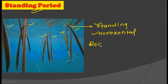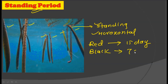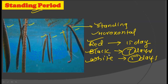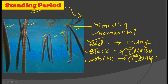In red mangroves, this standing period is 15 days. In black mangroves, this period of standing is 7 days. And for white mangroves, this period is 5 days. So the propagules which fall off from the parent plant remain dormant for 15 days in the case of red mangroves, 7 days for black mangroves, and 5 days for white mangroves. This is the typical standing period required for all the different types of mangrove species.